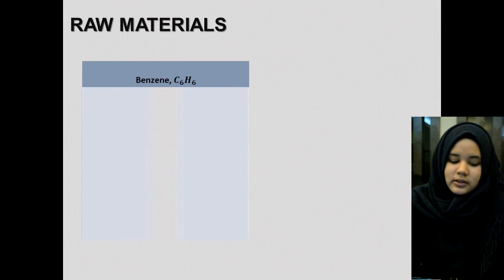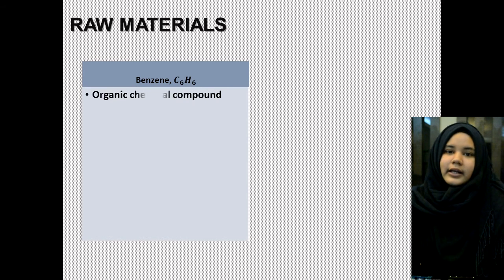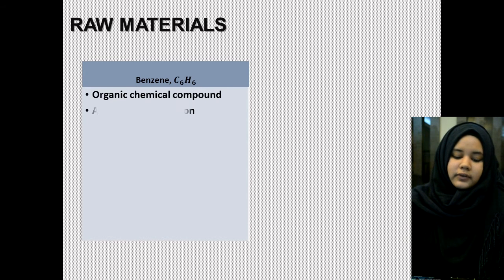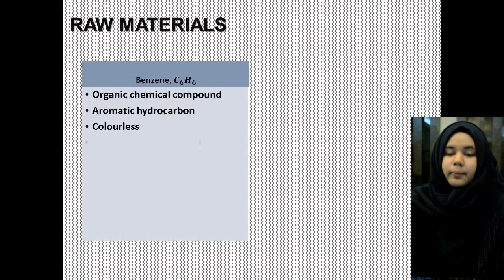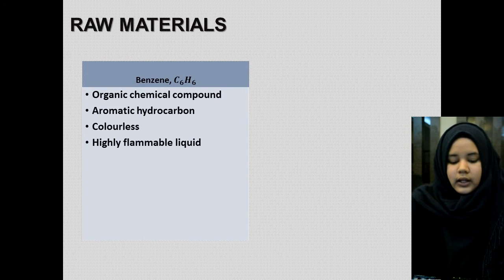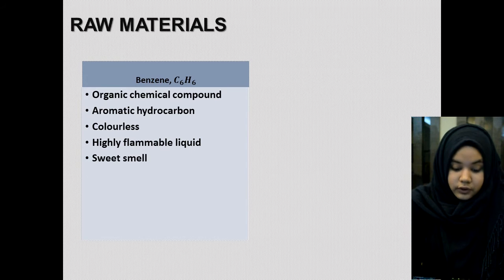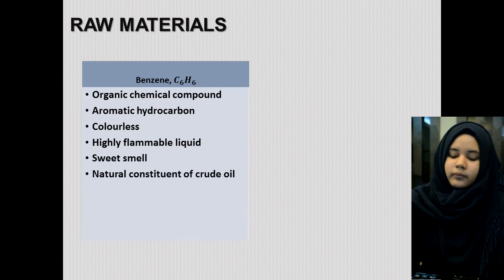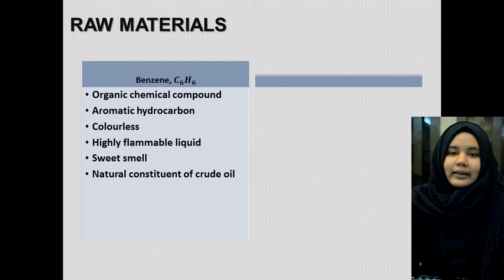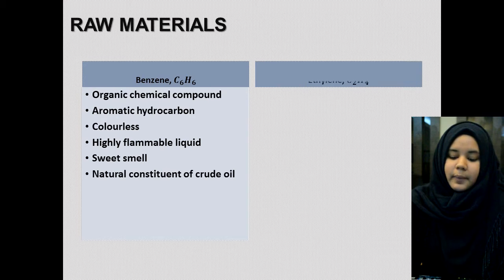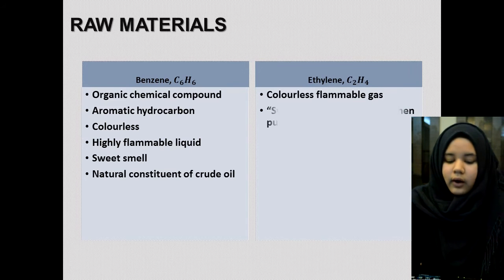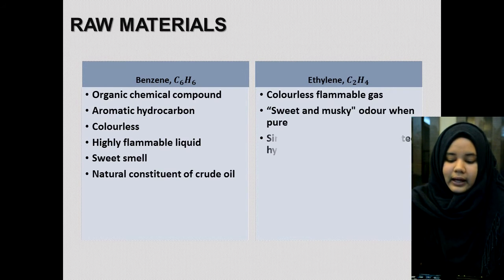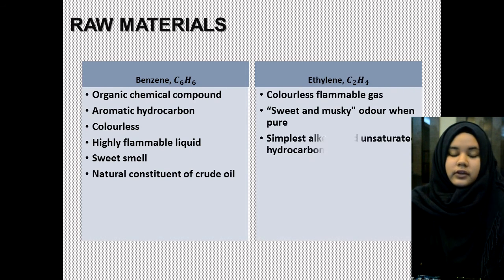Benzene is an organic chemical compound. It is an aromatic hydrocarbon — a colorless, highly flammable liquid with a sweet smell. It is a natural constituent of crude oil. Ethylene is a colorless, flammable gas with a sweet and musky odor when pure. It is the simplest alkene and an unsaturated hydrocarbon.